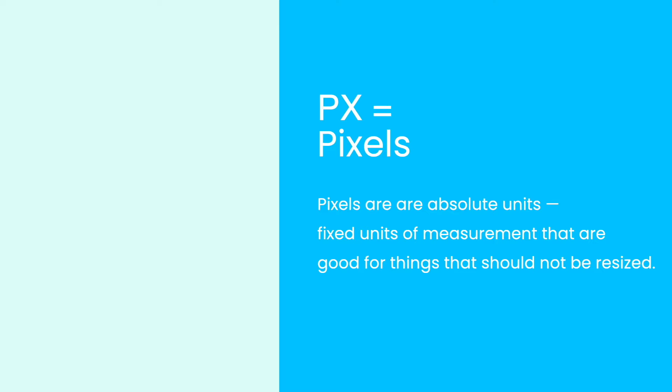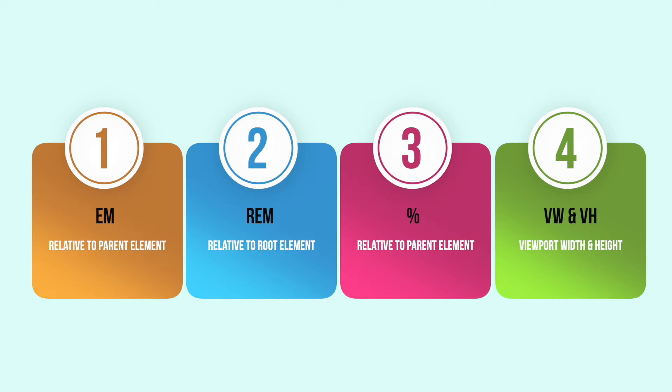The first thing you need to know is that there are absolute units and relative units. Pixels are absolute units — fixed units of measurement that are good for things that should not be resized. This makes them bad for being responsive across devices. Relative units are better across different devices and screen sizes because they can scale up and down according to size.